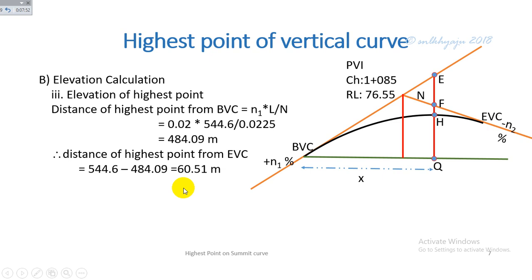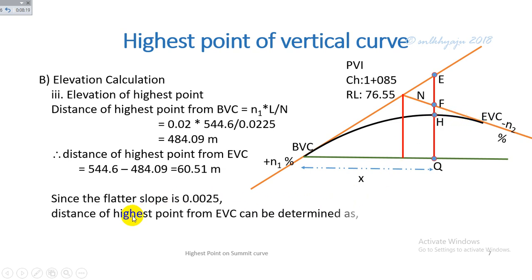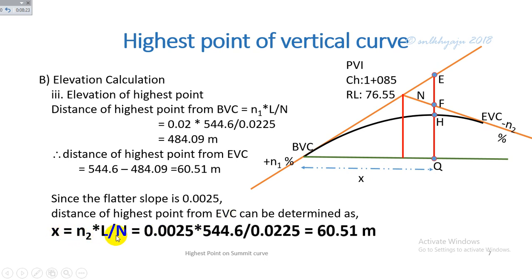Alternatively, since the flatter slope is n2 = 0.25%, the highest point lies along the flatter slope toward tangent point T2 — the end of the vertical curve. The distance from the end of the vertical curve to the highest point can be calculated directly using x = n2·L / N, which also gives 60.51 m, confirming the previous result.